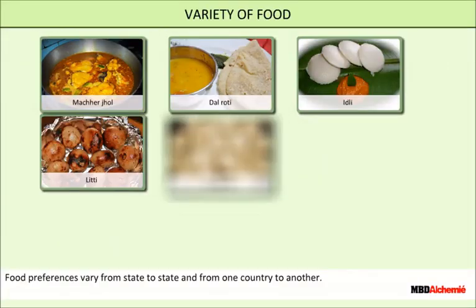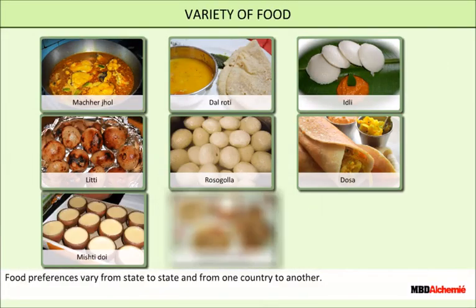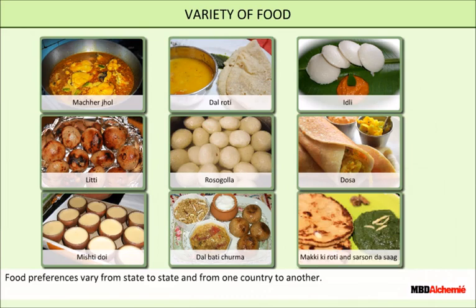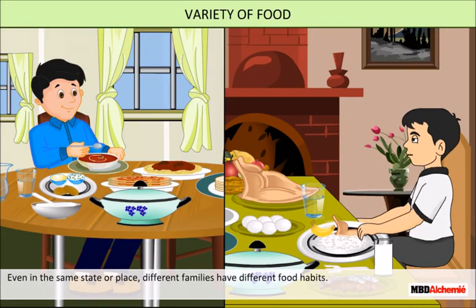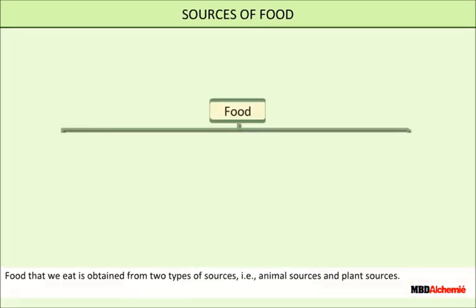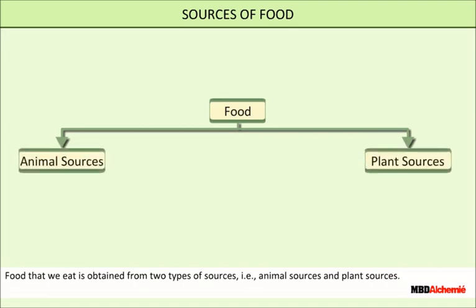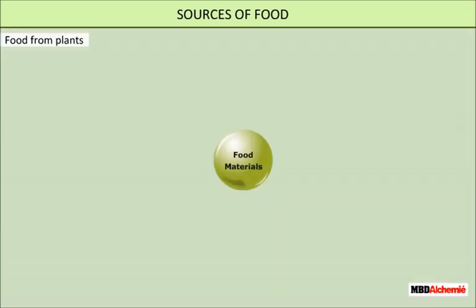Food preferences vary from state to state and from one country to another. People of different states eat different kinds of food. Even in the same state or place, different families have different food habits. The food that we eat is obtained from two types of sources: animal sources and plant sources.